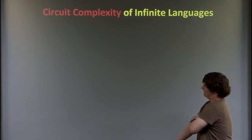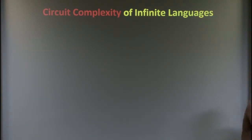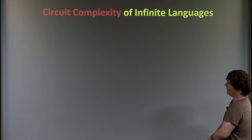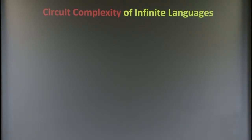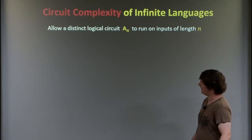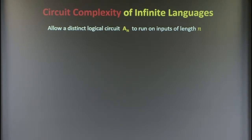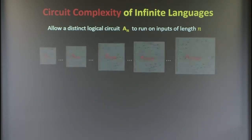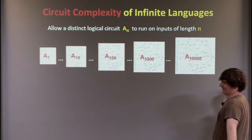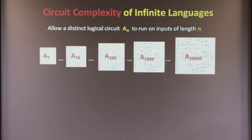The way we've been looking at circuits is they're finite objects that take a finite number of inputs and output a bit. It's natural to ask whether you can use circuits to compute infinite languages — problems of the usual kind solved via algorithms or Turing machines. This is done by allowing a distinct logical circuit called C_n to be run on inputs of length n. You imagine an infinite sequence of circuits, one for each input length.